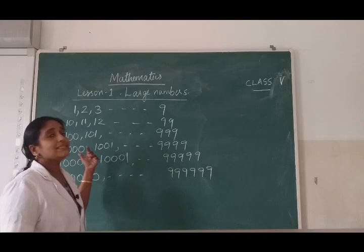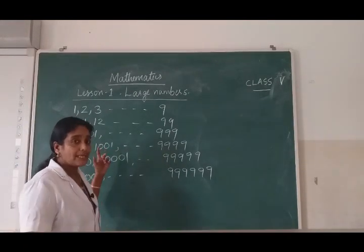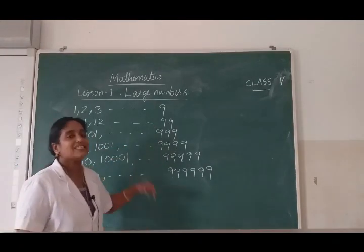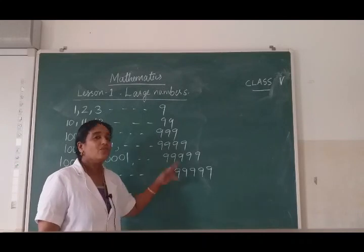Can I ask a question? What is the difference between the smallest 3 digit number and the greatest 2 digit number? The answer is 1.